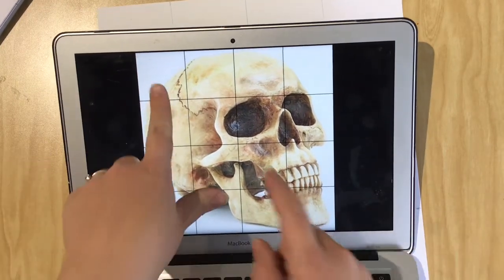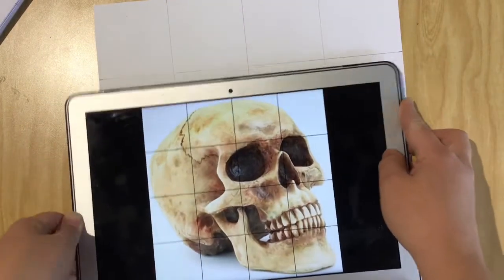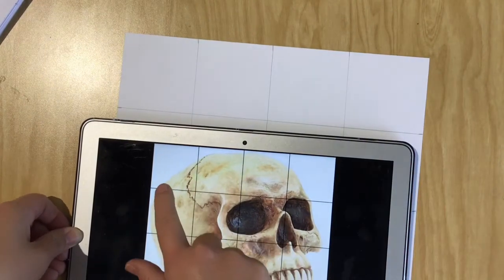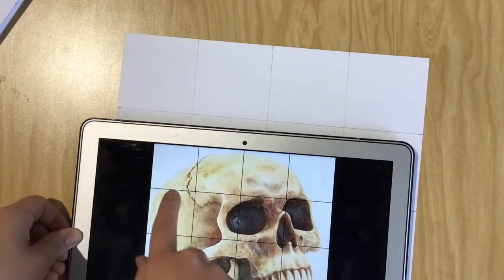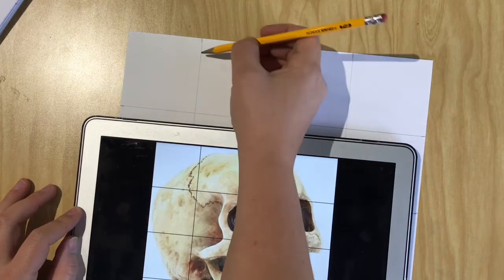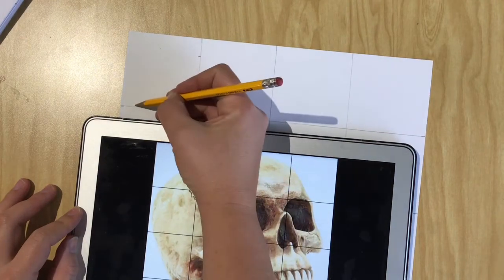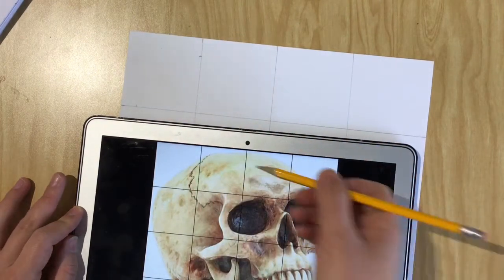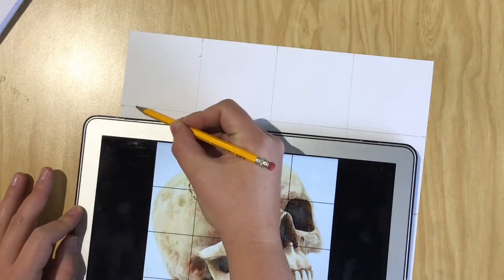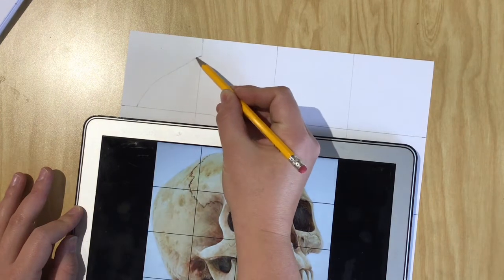So you can start wherever you'd like. I would start with something simple. So I'm going to start in this first box up here. So all I'm looking at when I start drawing, it's much easier with the iPad, is what is in this first box. And I'm going to try to match that. So I noticed that there's an image that starts here, and it curves down and ends about here. So I'm just mapping out what I see in that first top box.